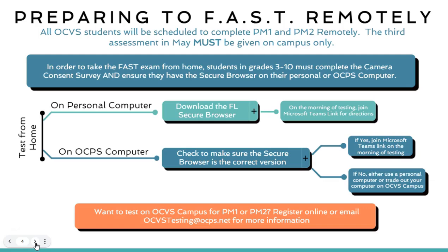For all remote testing, if your child would like to test on campus instead, you can email us at ocpstesting@ocps.net and we will help make that happen. There is a camera consent form that you will need to fill out prior to FAST testing remotely, where you are signing an agreement to have your camera turned on and allow the portal to access a camera so that the teacher can monitor you.